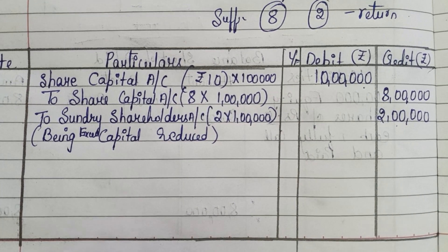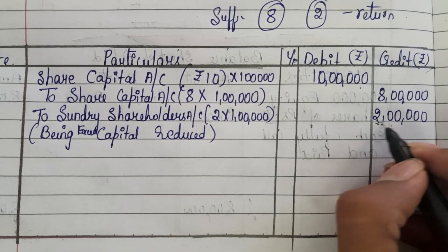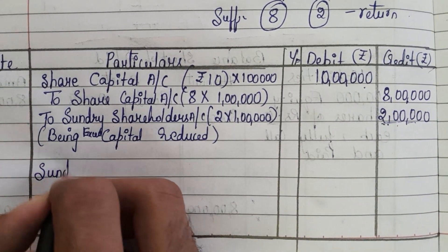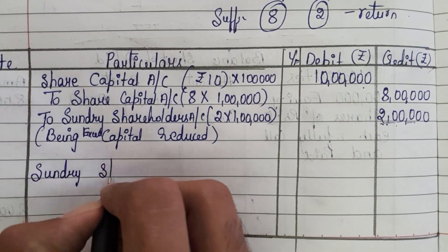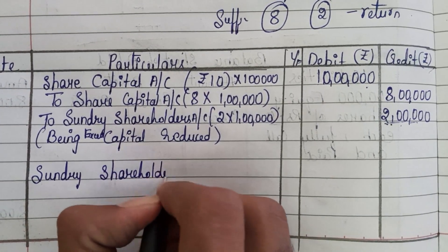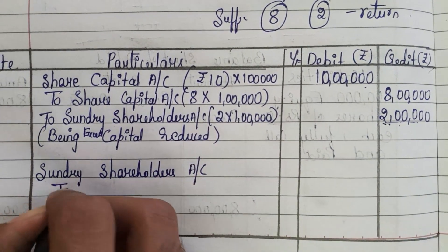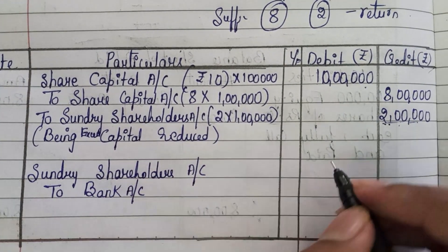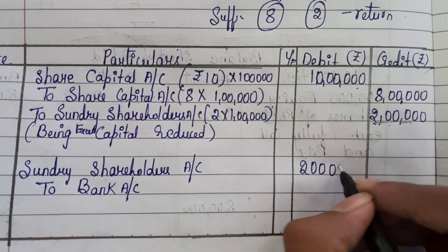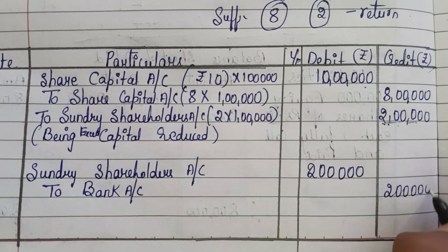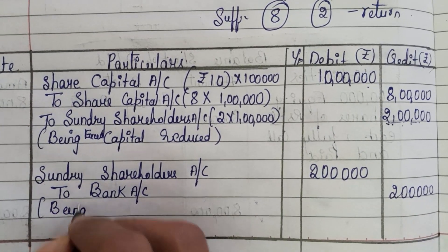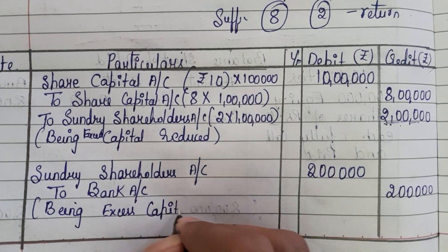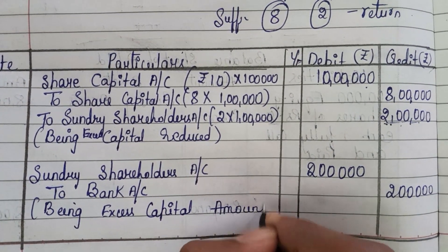Now the second entry: we need to pay the excess 2 lakh rupees to the shareholders. Sundry Shareholders Account debited, to Bank Account, for 2 lakh rupees. The narration will be: being excess capital amount returned.